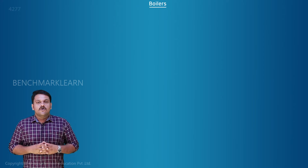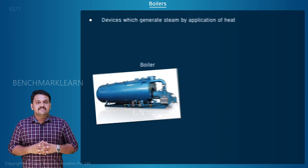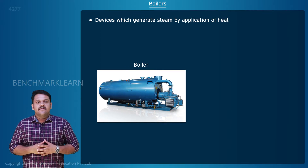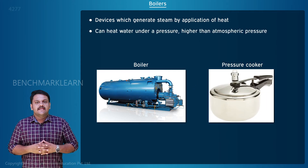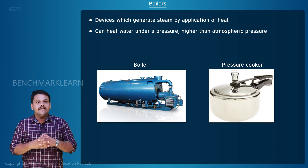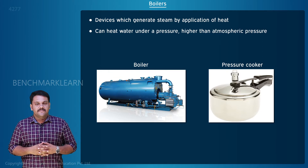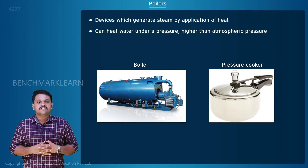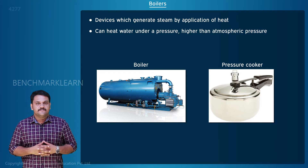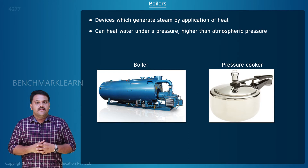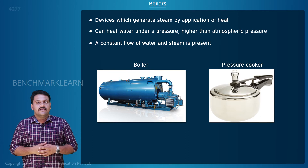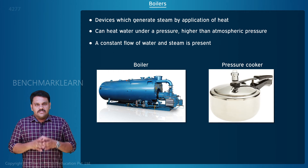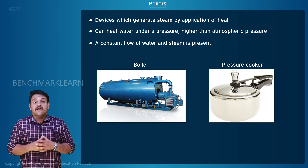Boilers or steam generators are devices which generate steam by application of heat. Boilers can be related to pressure cookers. Both can heat water under a pressure which is higher than the atmospheric pressure. A pressure cooker is for cooking food, but boilers are for producing high pressure steam for various purposes. Another difference is that in a boiler a constant flow of water and steam is present, but in a pressure cooker this constant flow is absent. So we get a rough idea of what happens in a boiler.